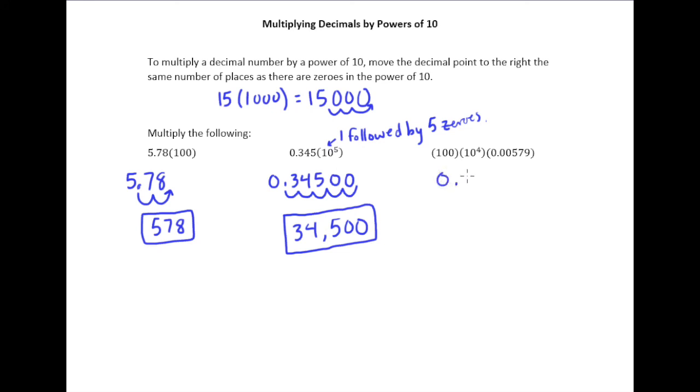We write out our number here first. We go 1, 2, 3, 4, 5. We need to go one more. That's 6. So we better add a zero. Of course, all the zeros that are back here we don't include. So the answer is 5,790.